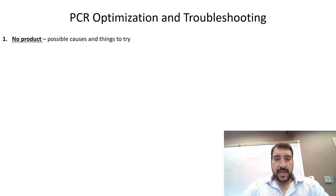PCR is a ubiquitous technique in molecular biology. But what happens when PCR doesn't do exactly what you want to do? PCR optimization and troubleshooting is routine for any person in a molecular biology lab. There are a number of things that can go wrong in PCR. One of them is you could have no product. I'm going to go over possible causes of having no product and things that we could try.